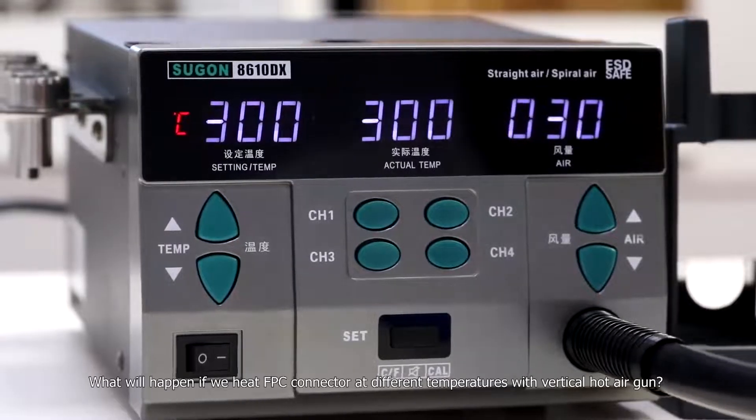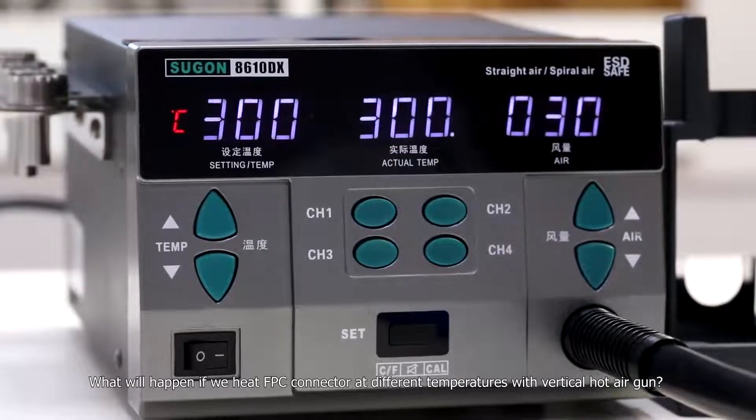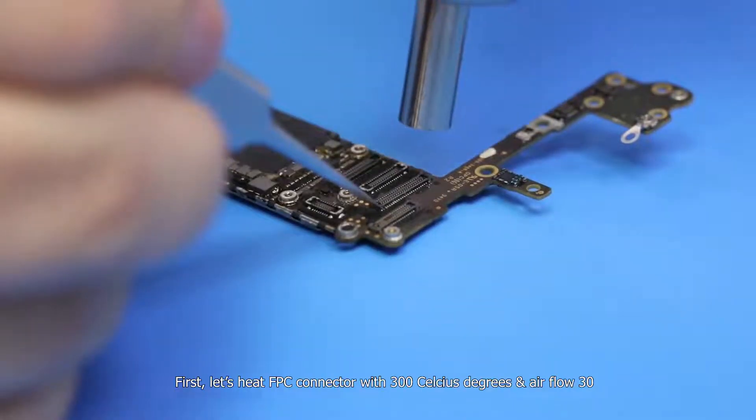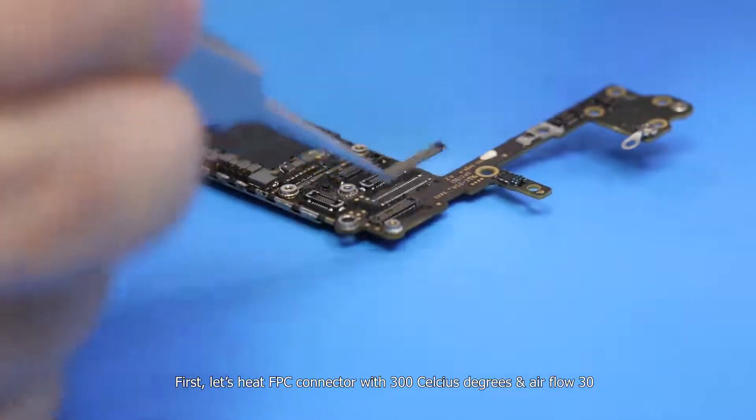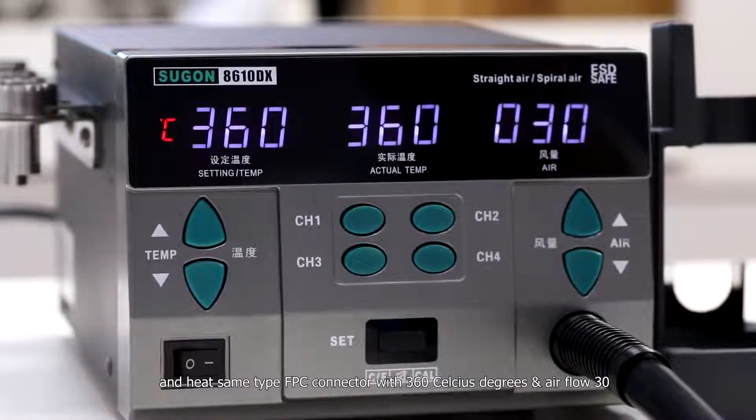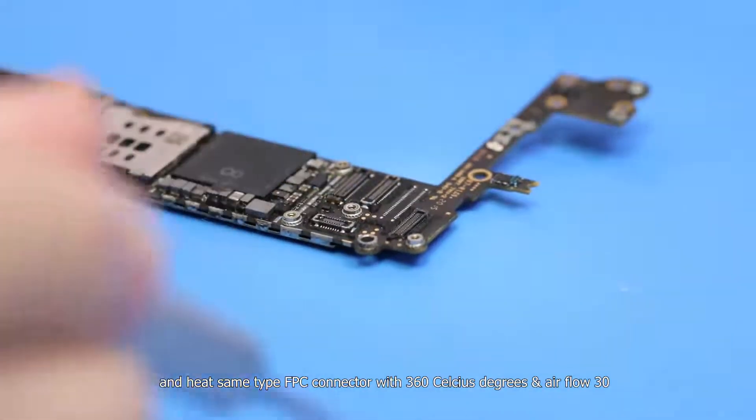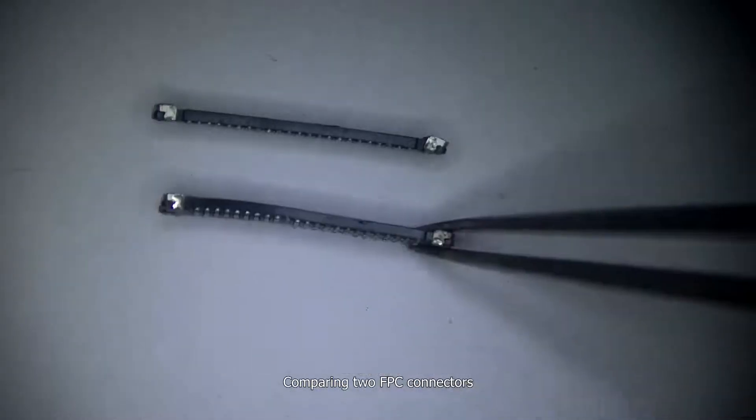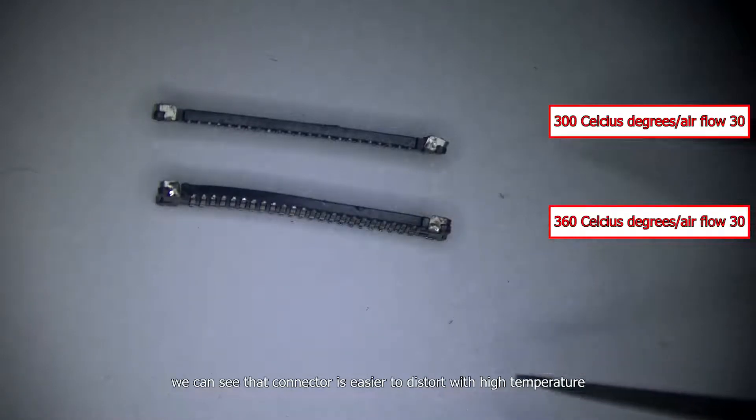What will happen if we heat the FPC connector at different temperatures with vertical hot air gun? First, let's heat the FPC connector with 300C degree air flow thirty. And heat the same type FPC connector with 360C degree air flow thirty. Comparing two FPC connectors, we can see that connector is easier to distort with high temperature.